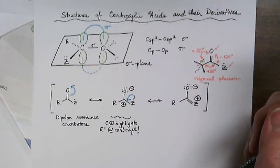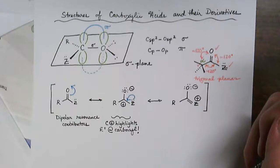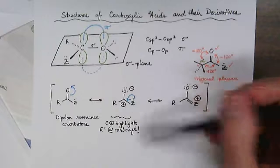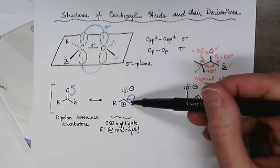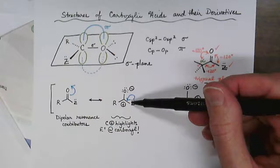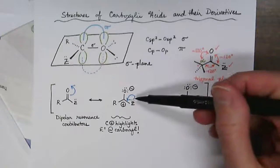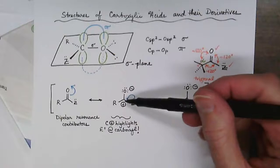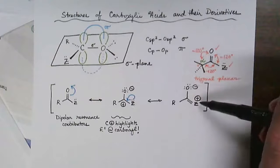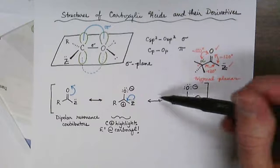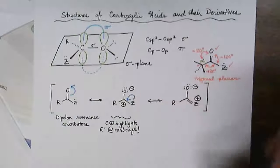And nucleophiles will add into the carbon in our nucleophilic acyl substitution reactions. When Z equals oxygen or nitrogen—so for carboxylic acids, esters, and amides—we can also take a lone pair of electrons and form a carbon-oxygen or carbon-nitrogen double bond. So in total, we can draw three resonance structures